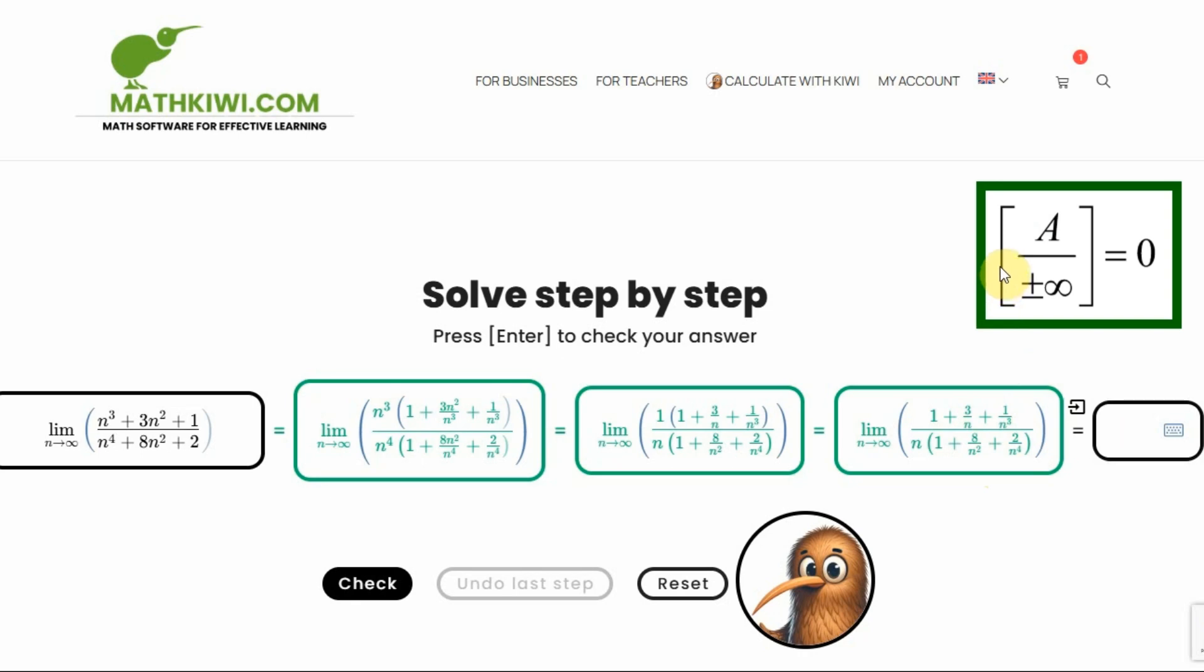So here we have a situation where we have one divided by infinity, right? And that tends to zero. Why? Because of one. Because a constant divided by infinity always approaches zero, right?